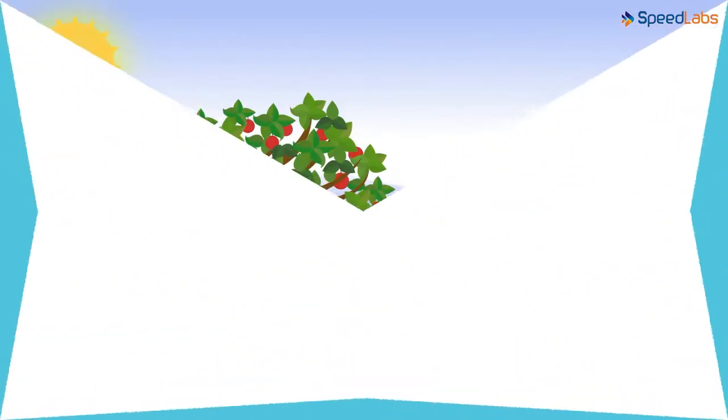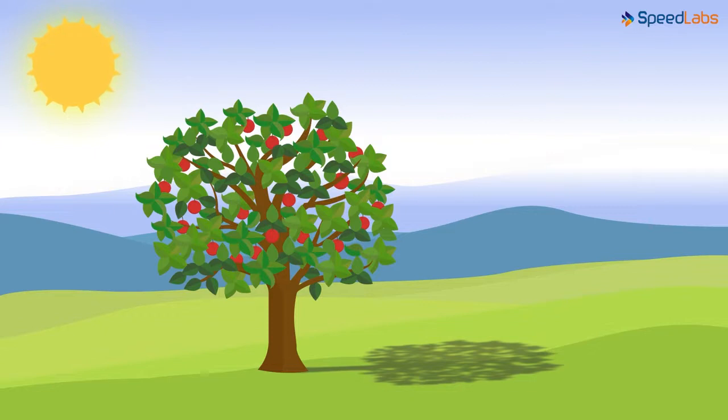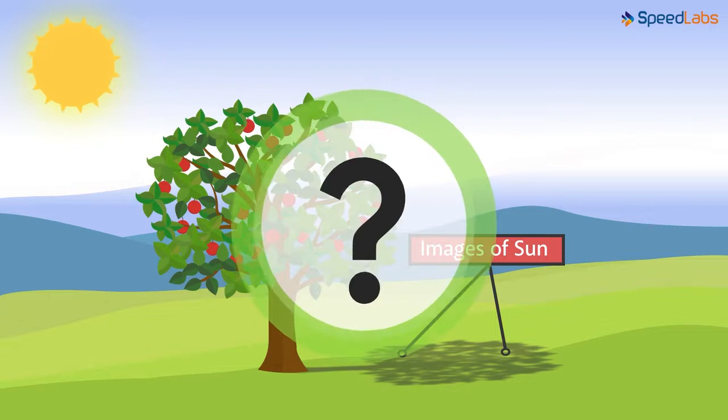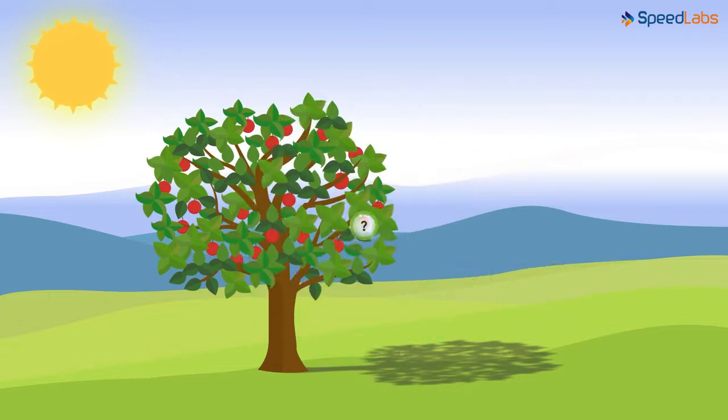Have you ever seen small circles of light formed under a thick tree, like the one shown below? Yes, these are the images of the sun. They are also formed because of the light passing through small holes. But what acts as a pinhole here? The small gaps between the leaves act as a pinhole.